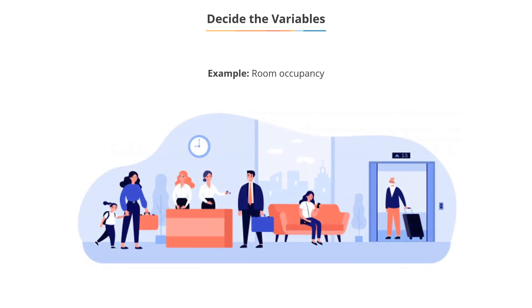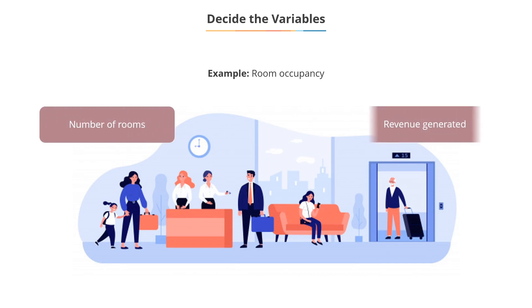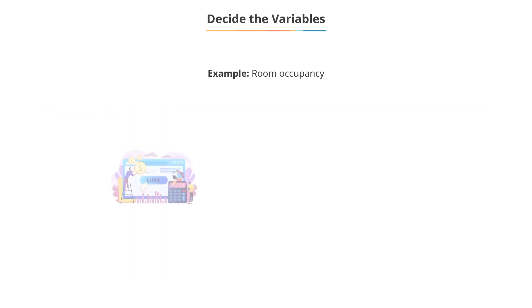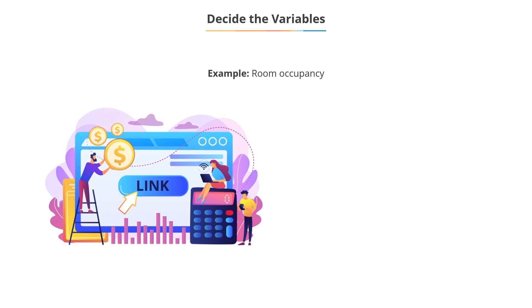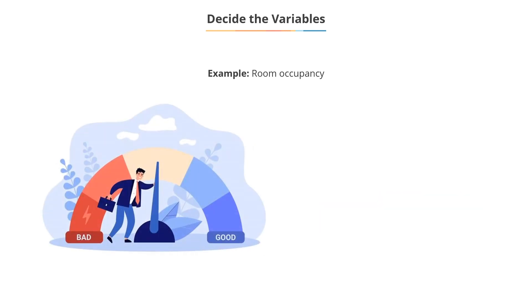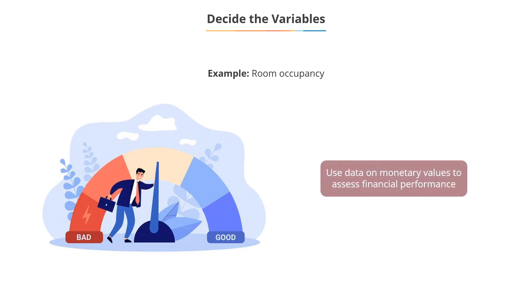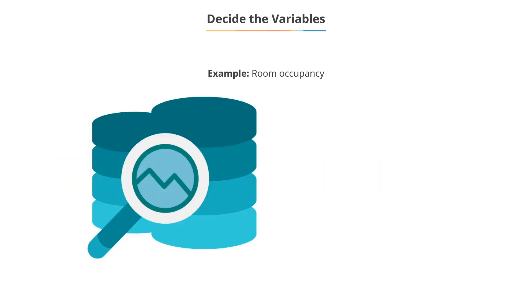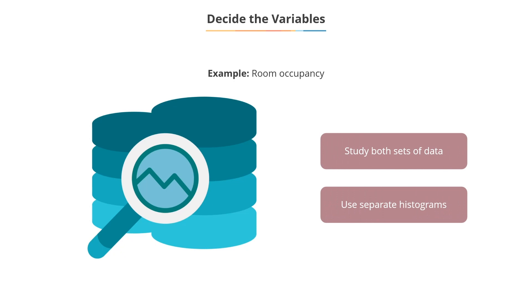Consider the example of room occupancy. Data could relate to the number of rooms or the revenue generated. A strategically planned differential pricing system could ensure good room occupancy. This could be studied by using data on the number of rooms occupied. However, use of data on monetary values helps to assess the financial performance. Hence, both sets of data could be studied using separate histograms.